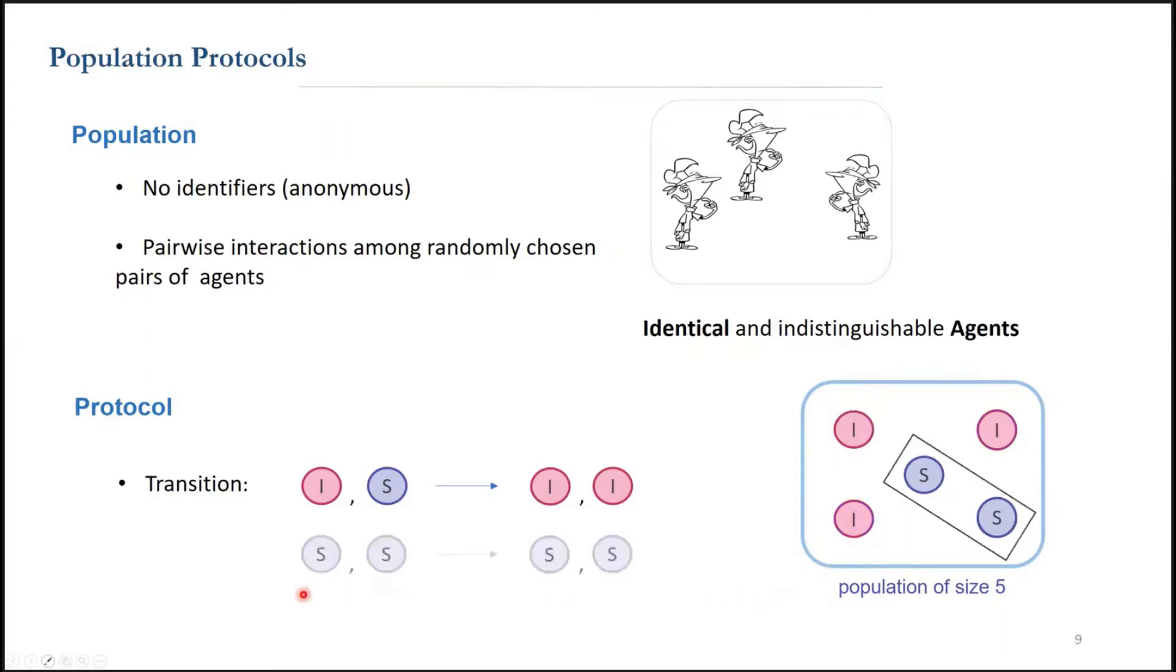For example, if two agents in state s interact, since there is no rule in the protocol, nothing happens, and none of the agents change the states. We call this a null interaction.